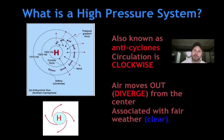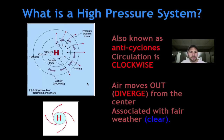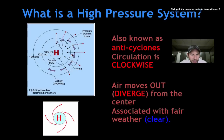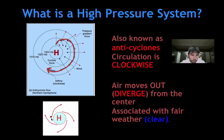The first type of pressure system we're going to look at are high pressure systems. High pressure systems are also known as anticyclones, and their circulation is clockwise. So when we look at the diagram on the right here, these are all different vectors, but what we see is that the resulting wind or air movement that comes out of a high pressure moves in a clockwise fashion.